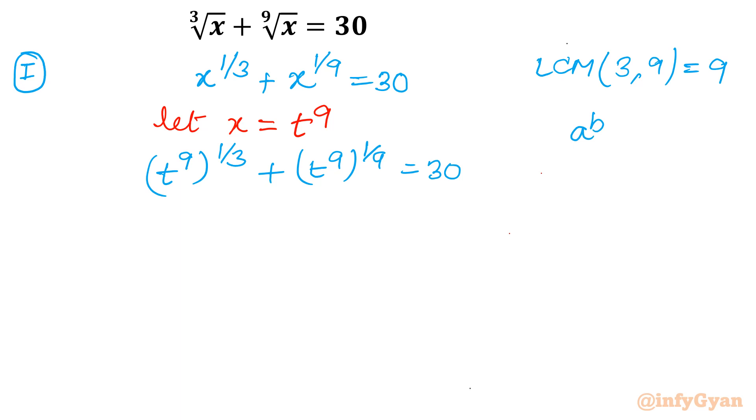Now the property of exponent will come, that is a power b whole power c can be written as a power bc. So this value will convert into t power 3 plus t minus 30 equal to 0.